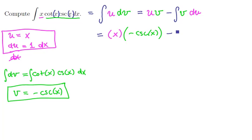And then we're going to subtract the integral of that negative cosecant of x again, times the differential du, which is just 1 dx.